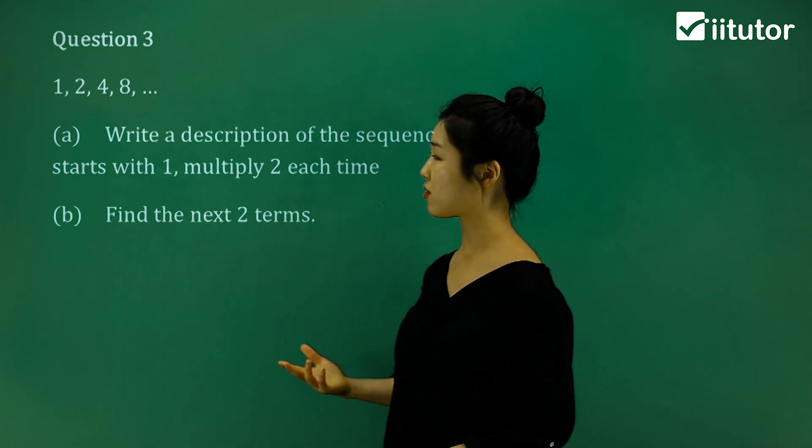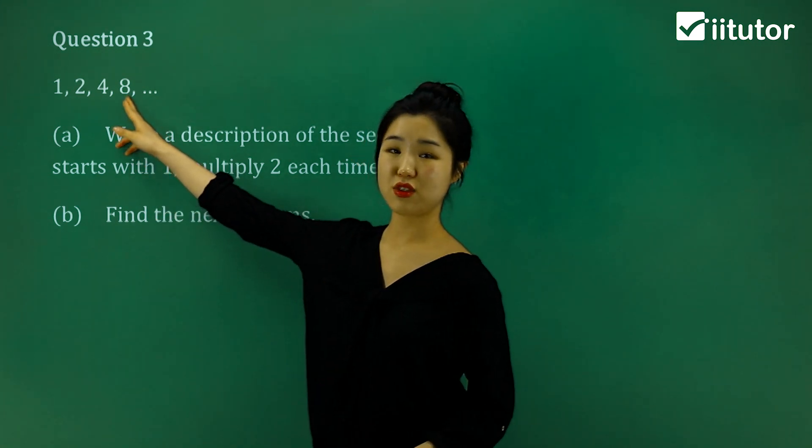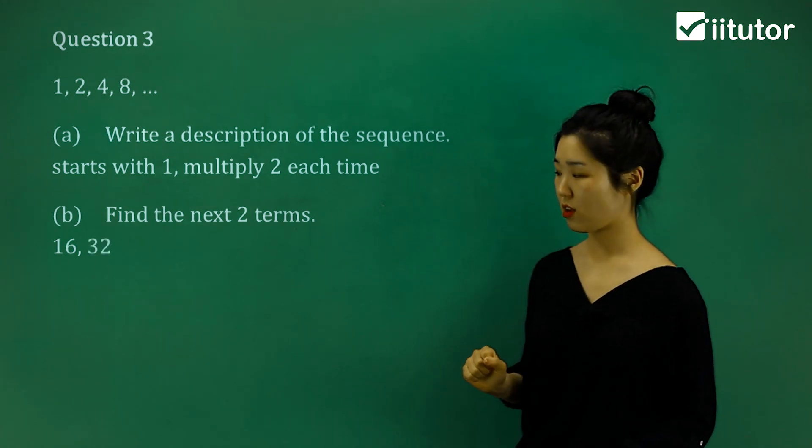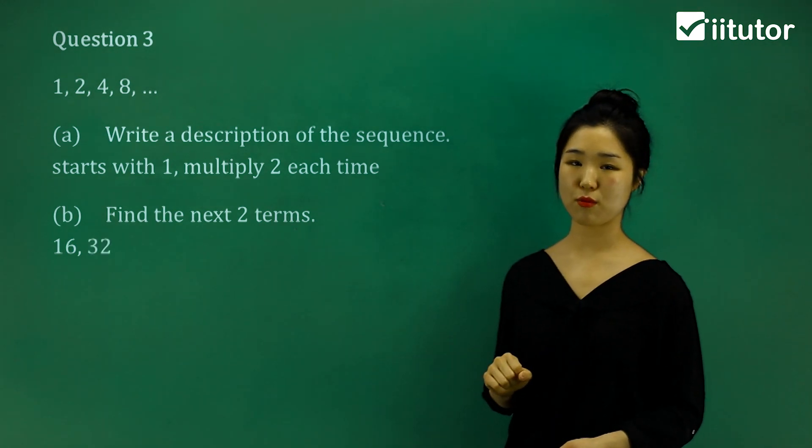So when I ask you to find the next two terms, let's do the procedure. What's 8 multiplied by 2? It's 16. 16 multiplied by 2? That's 32. And that is the next two terms. Very simple.